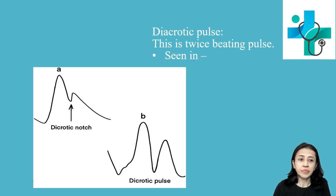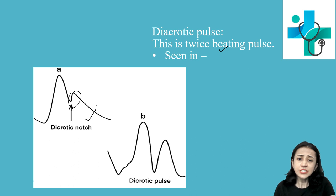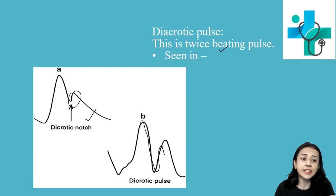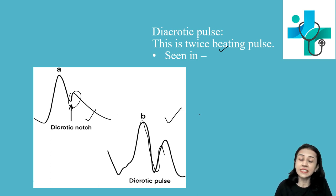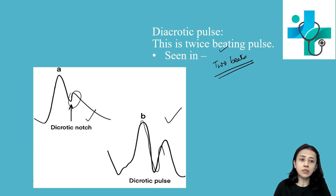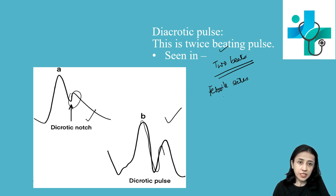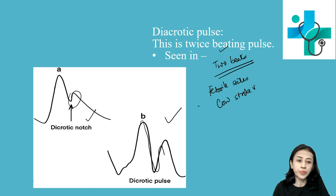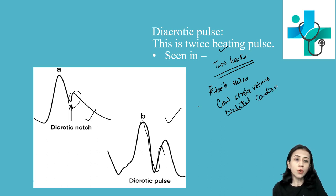Next is diacrotic pulse, also known as twice beating pulse. Normally there is a diacrotic notch, but if the pulse is diacrotic the diacrotic wave becomes prominent, giving the impression of two beats — one in systole and the other in diastole. This is seen in febrile conditions, especially in typhoid fever, and also in patients with low stroke volume such as dilated cardiomyopathy.